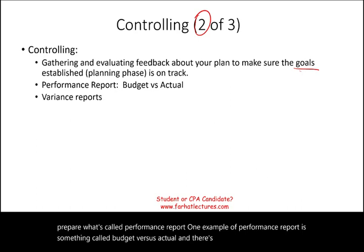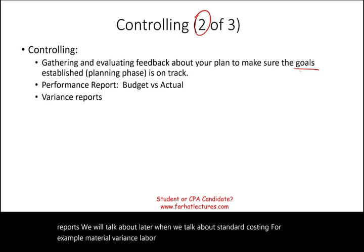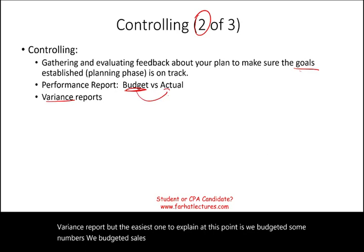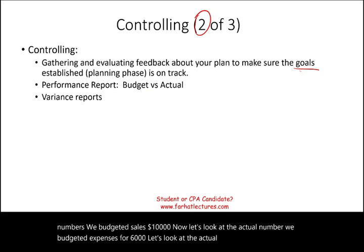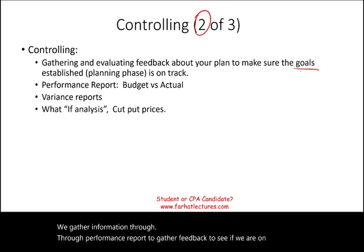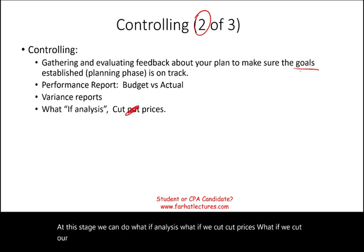The easiest example to explain right now: we budgeted sales at $10,000 — now let's look at the actual number. We budgeted expenses at $6,000 — let's look at the actual numbers. We gather information through performance reports to see if we are on track. At this stage we can also do what-if analysis: what if we cut prices? What if we increase our prices? What would happen to our sales?